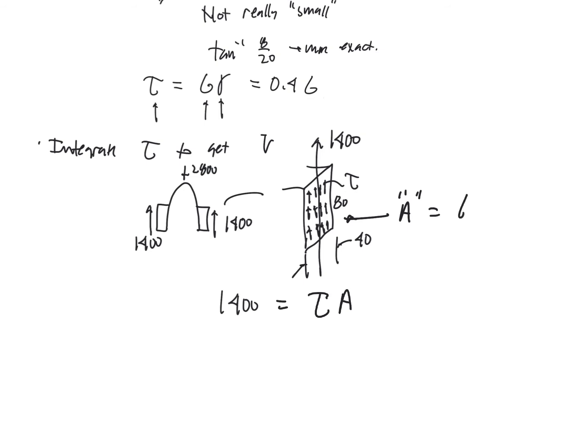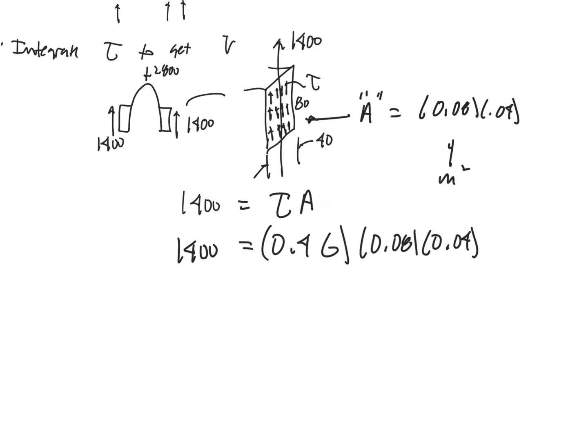But if we convert that, that's equal to 0.08 times 0.04. So we're converting that to meters. So make sure that you do that particular conversion. So that's going to give us 0.4 times G, that's tau, and then the area is 0.08 times 0.04, and that's all equal to 1400. So now we have one equation, one unknown. This is the only term that is not known, and so we can just solve for that.